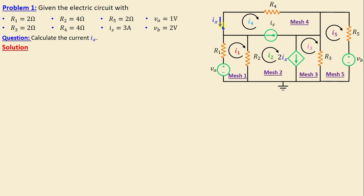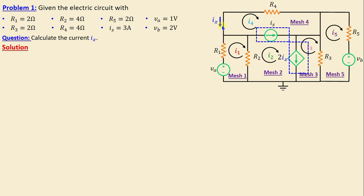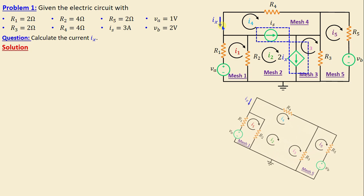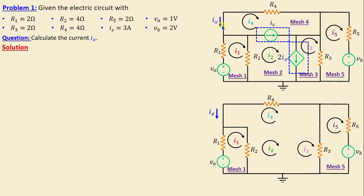After assigning the mesh currents, we need to remove the two branches containing the independent current source Is and the dependent source 2ix, to obtain our super mesh.